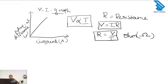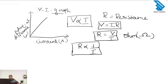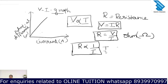Next we look at the relation between resistance and current in the circuit. From the equation, R is inversely proportional to I. Inversely proportional means when one quantity increases, the other quantity will decrease. So when the current increases in the circuit, the resistance will decrease.